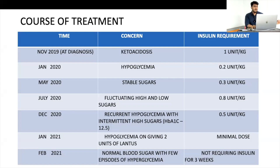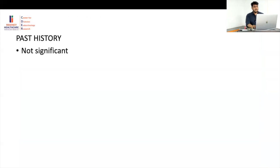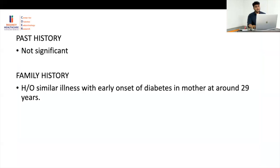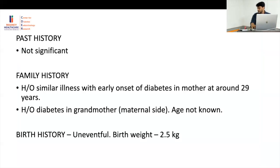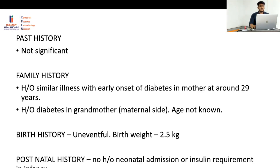After one month she said they were not requiring insulin at all because even a very small amount caused hypoglycemia — that is where we thought of an alternative diagnosis. On examining the patient and eliciting history, there was nothing significant in past history. In family history we found her mother had early-onset diabetes at around 29 years and her grandmother had similar diabetes with onset possibly around 50–60 years.